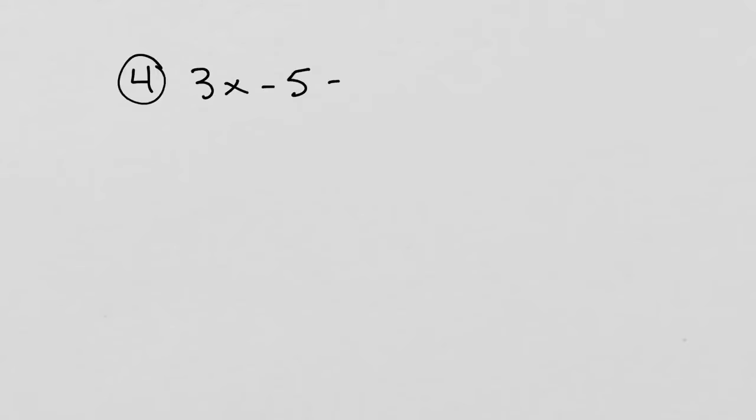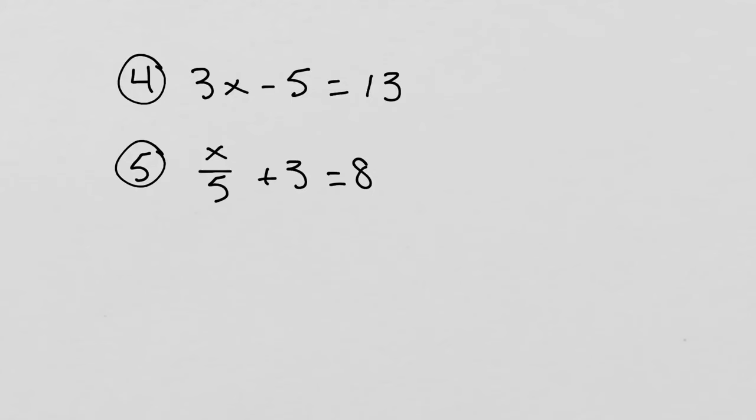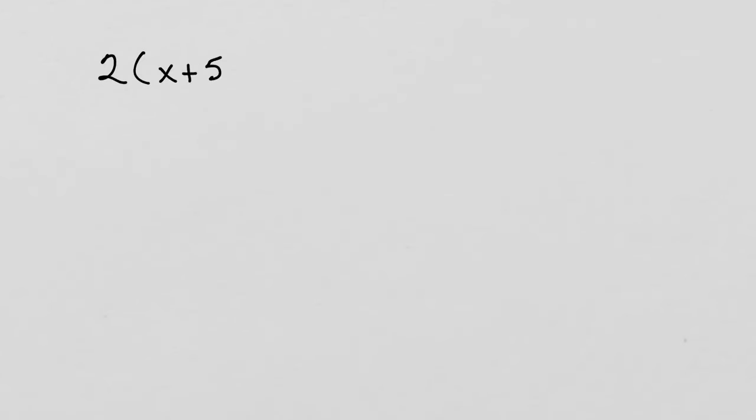Try the following and leave your answers in the comments section. Number 4: 3x minus 5 equals 13, solve for x. Number 5: x over 5 plus 3 equals 8, solve for x. Most confusing two-step equations: two-step equations that require distribution or have an operation in parentheses are the ones most students get confused with. Not all math teachers agree that this is a proper two-step equation, but it is.